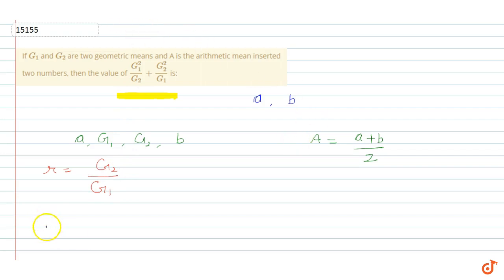If g2 by g1 is the common ratio, then our first term, we can say that if the first term is a, then a into r is equal to g1. The first term is a, the second term is ar, then ar square, then ar cube.